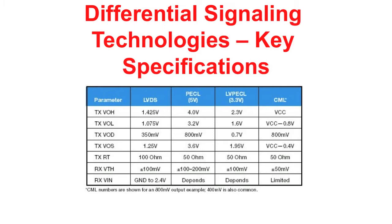On the other hand, PECL provides a wider output voltage swing between 700 to 800 millivolts and higher common mode levels, typically 3.6 volts for a 5-volt supply voltage. These characteristics make the technology more suitable for applications that need to transmit data at higher frequencies over long distances.